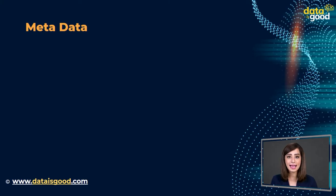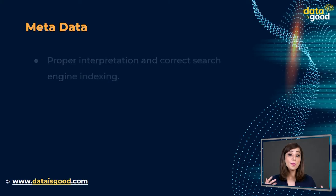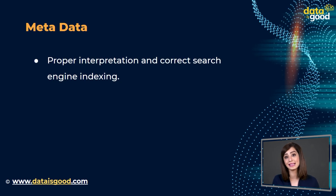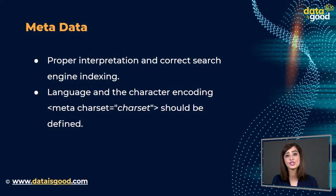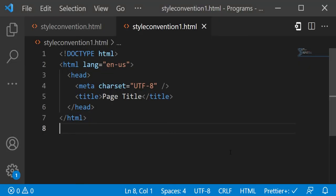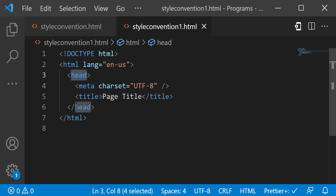Now let's understand metadata. To ensure proper interpretation and correct search engine indexing, both the language and the character encoding — meta charset — should be defined as early as possible in an HTML document. Here is an example of metadata where we have the meta tag at the top of the document in the head tag, which is usually recommended.